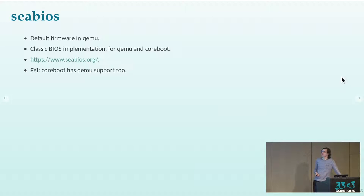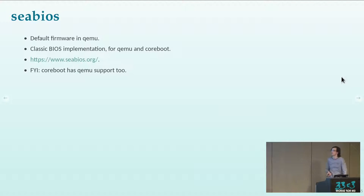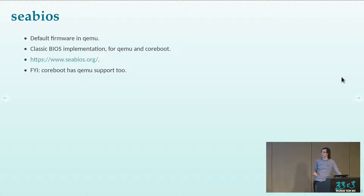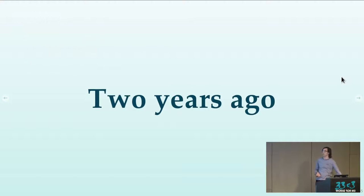CBIOS is the default firmware in QEMU. If you start QEMU without specifying a firmware, you get CBIOS by default — it's a classic BIOS implementation. The main users are QEMU and Coreboot. If you have Coreboot on your machine and need a BIOS interface, that's the way to go. You can also run Coreboot with QEMU.